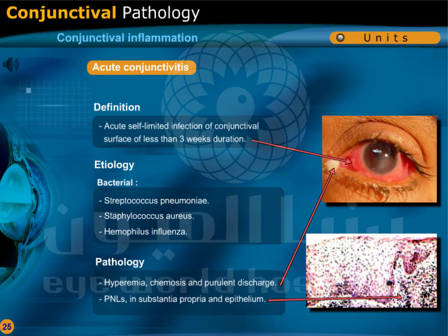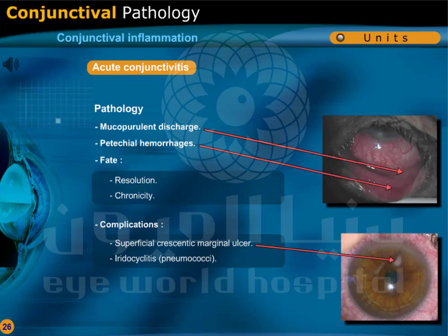chemosis and purulent discharge. Polymorphonuclear leukocytes are present in the substantia propria and epithelium. There is also mucopurulent discharge and petechial hemorrhage. Acute conjunctivitis may resolve or may turn into chronic conjunctivitis. It could be complicated by superficial crescent-shaped marginal ulcer or iridocyclitis by pneumococci.